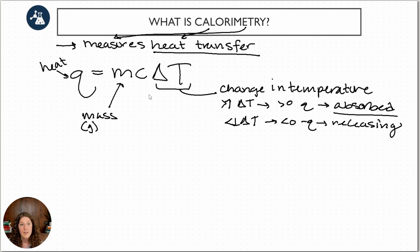And then finally we have C, which is the specific heat capacity. Specific heat capacity is a characteristic of the compound that we're working with, or the sample, and it basically says here's how much heat that this thing can absorb or release.